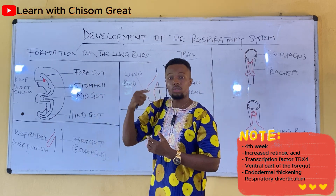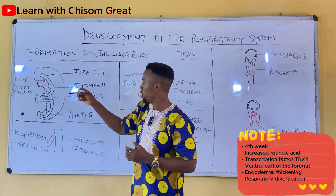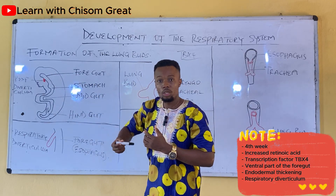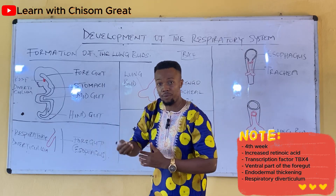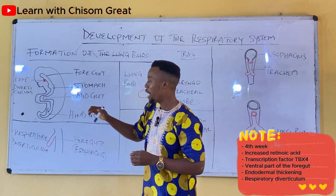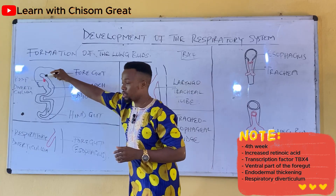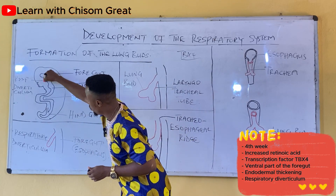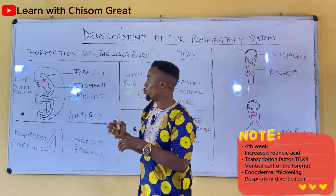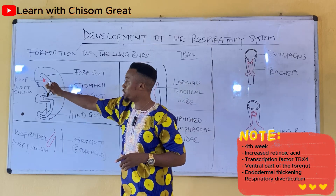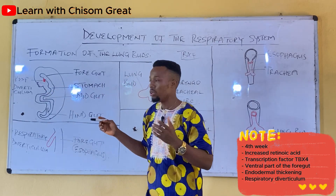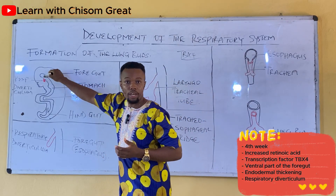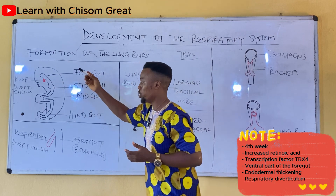TBX4 causes some endodermal cells to begin to proliferate and thicken. As these endodermal cells proliferate and thicken, it forms a thickening which is known as the respiratory diverticulum. This endodermal thickening is known as the respiratory diverticulum.